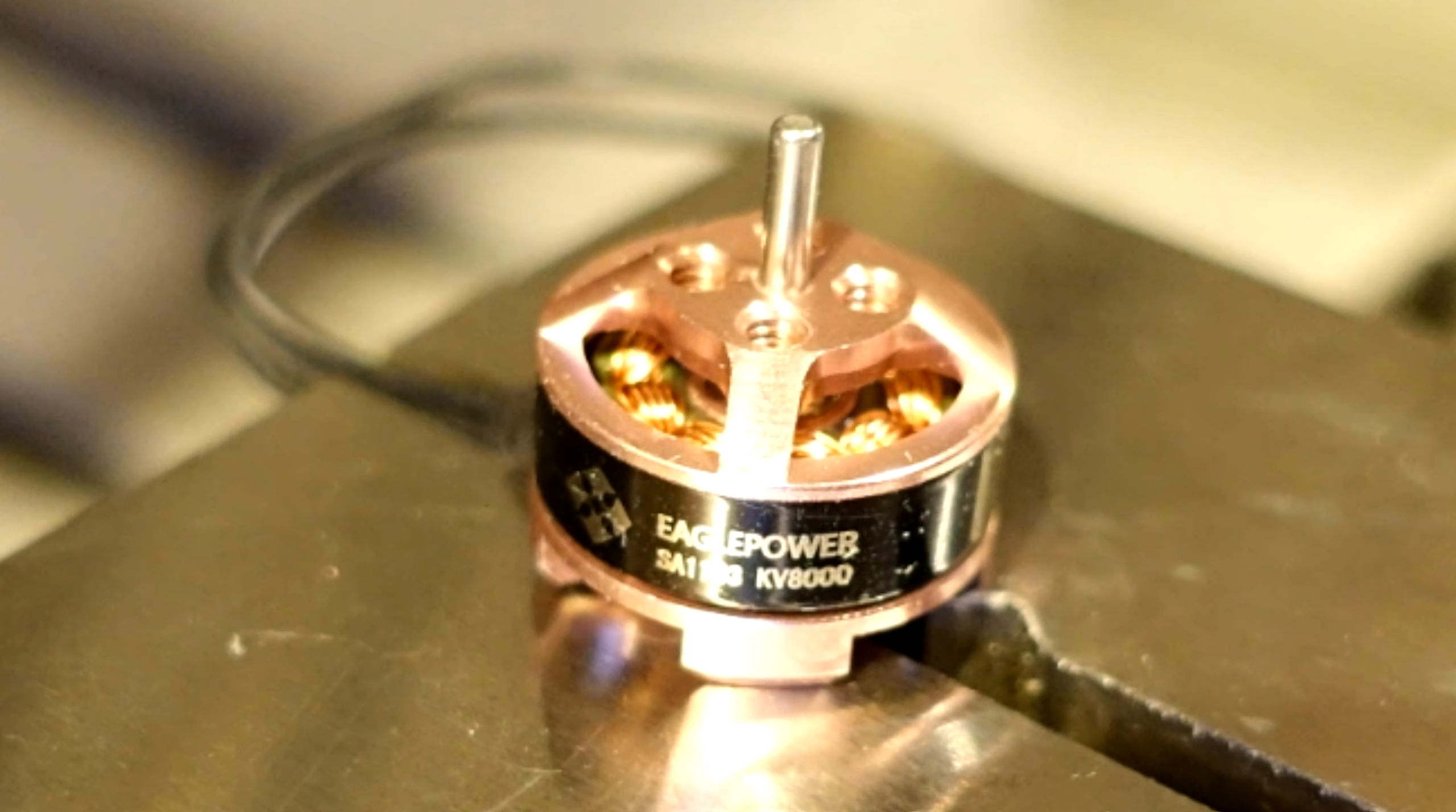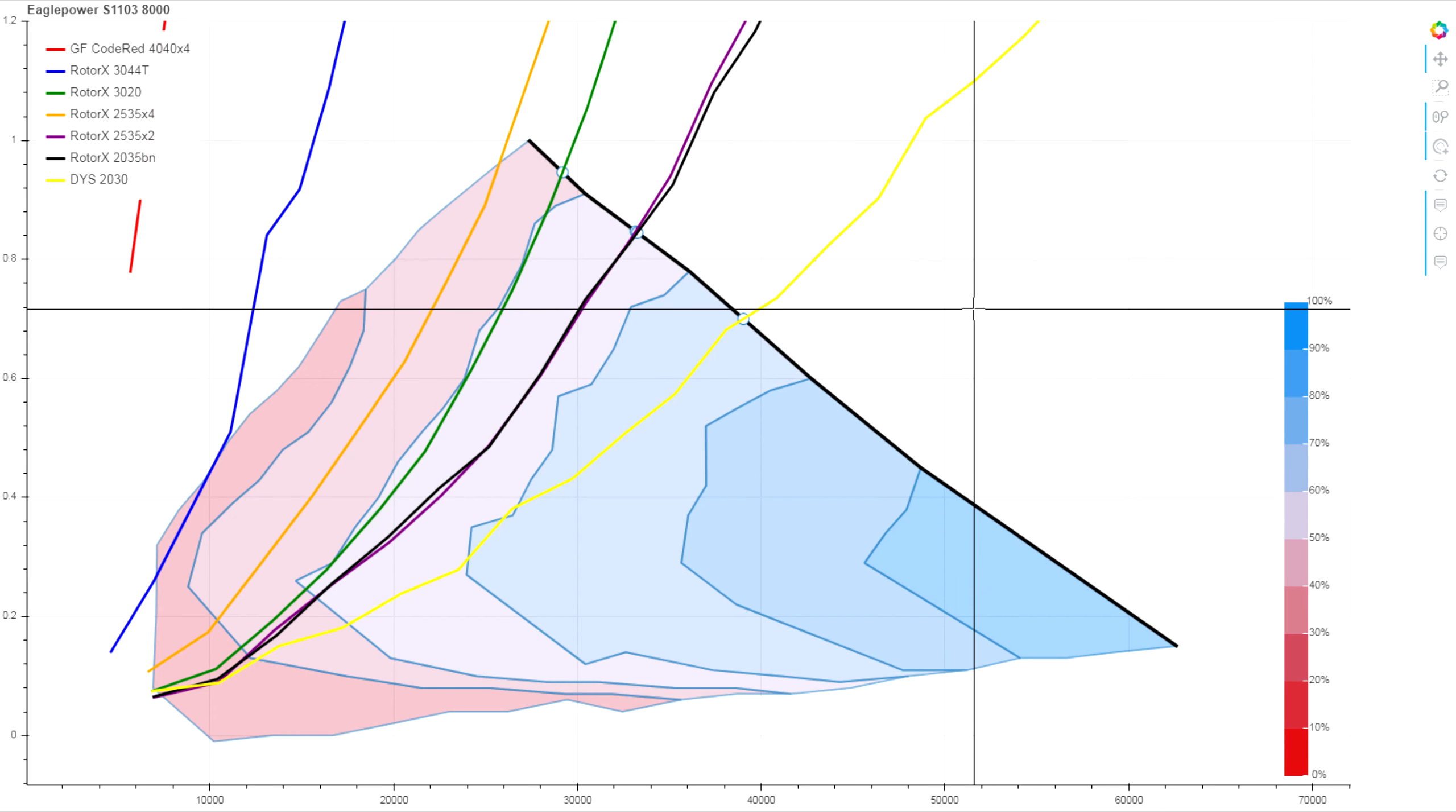Here we're looking at an Airblade branded Eagle Power S1103 8000 kV motor. This is a 3.6 gram motor and at this kV we're testing on 2S. Our estimated kV for this test came out to just about 79.70 kV, so super close to the nameplate rating.